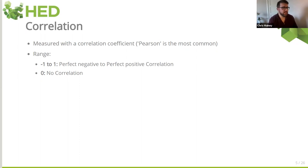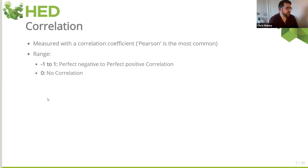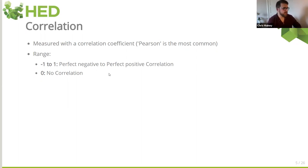The Pearson correlation coefficient assumes that you have two normally distributed numeric variables that you're comparing. You apply the correlation function to it and get a coefficient out, where the range of the output is minus one to one. Minus one is a perfect negative correlation, and one is a perfect positive correlation. If you get a correlation coefficient of zero, it's suggesting there is no correlation between them.